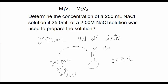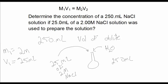What I would also do — though it's not stated in the problem — is add water. It's understood that one would add water to dilute a solution. So: M1 is 2 molar, the concentration of the more concentrated solution. V1 is 25 mL, the volume of the concentrated solution we're going to dilute. M2 is the unknown concentration to be determined. V2 is the volume of the new dilute solution, which is 250 mL.